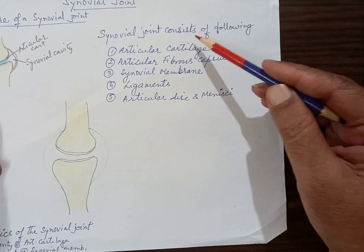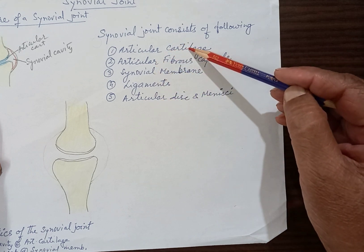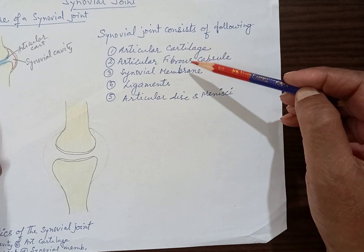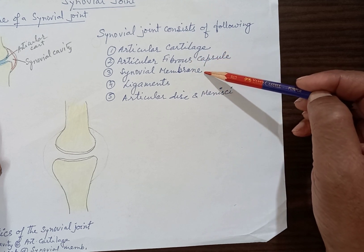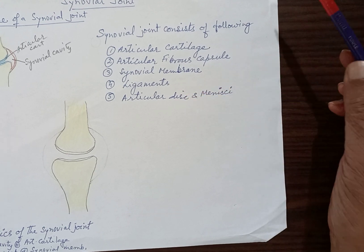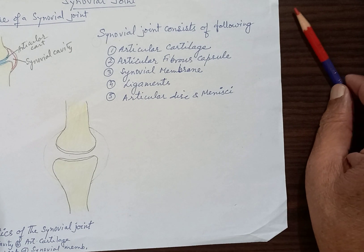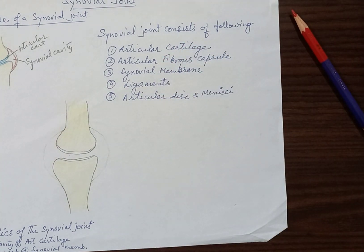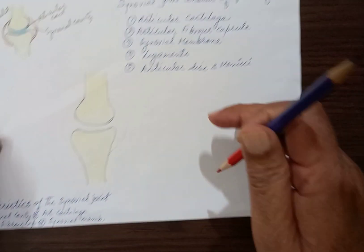The synovial joint consists of the following different parts: number one, articular cartilage; then the articular fibrous capsule; synovial membrane; ligaments; and articular disc or menisci. We will learn the structure of a synovial joint under these five headings. Let us come to the first heading — the articular cartilage.